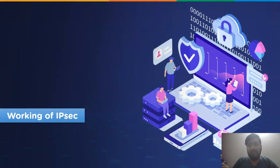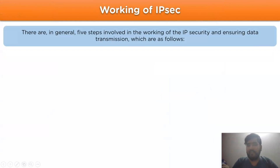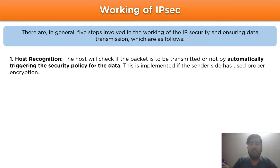Now let's move on to the working steps involved in IP security. In general, there are five steps involved in the working of IPSec to ensure data transmission over a network channel. The first step is host recognition. In this step, the host system checks whether the packet is to be transmitted or not by automatically triggering the security policy for the data, which is implemented by the sender side for proper encryption.